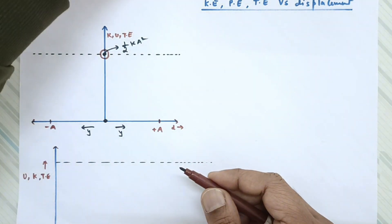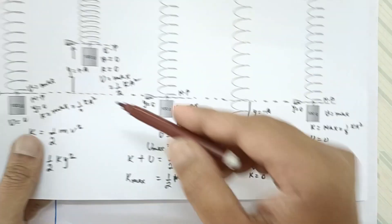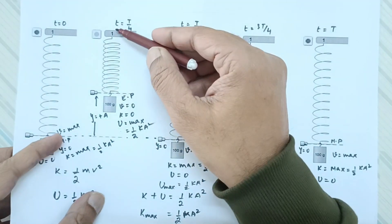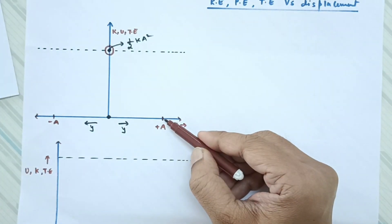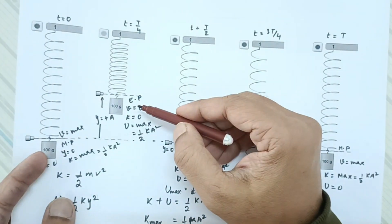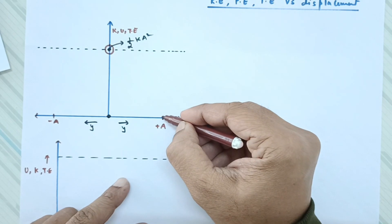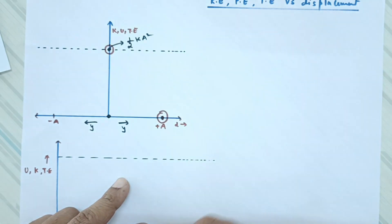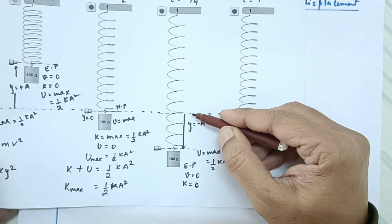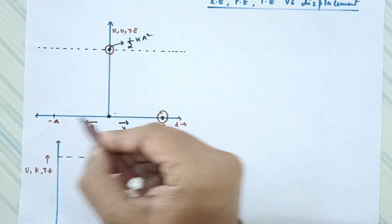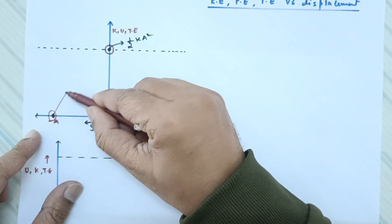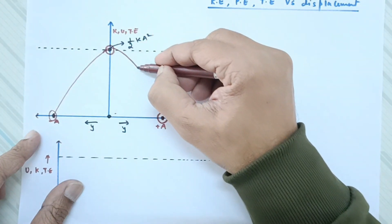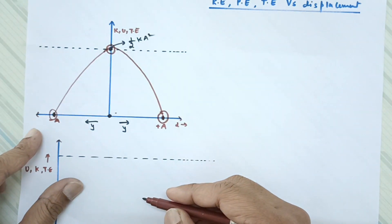Wherever y equals plus a — the extreme position on one side — kinetic energy is zero. Similarly, at y equals minus a, kinetic energy is zero. So I get these two points. The shape of the graph is parabolic, which I will explain in a moment.